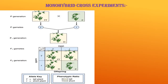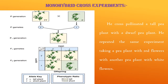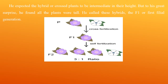In his monohybrid cross experiments, he cross-pollinated a tall pea plant with a dwarf pea plant. Please observe the schematic representation in the diagram. He repeated the same experiment taking a pea plant with red flowers with another pea plant with white flowers. He expected the hybrid plants to be intermediate in height, but to his great surprise, he found all the plants were tall.